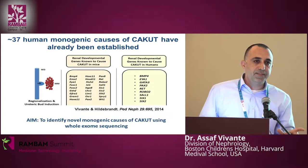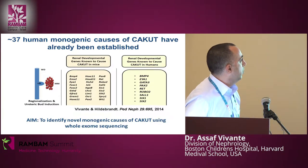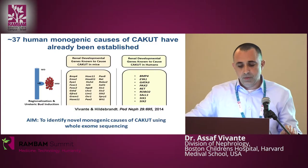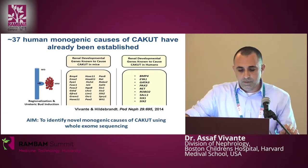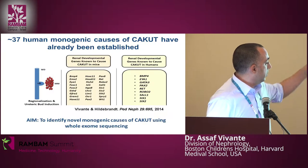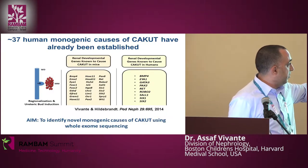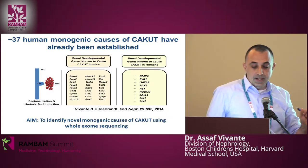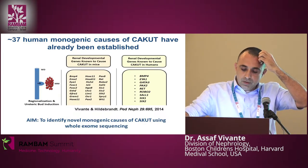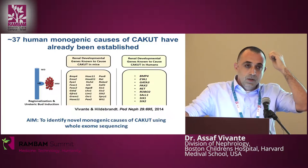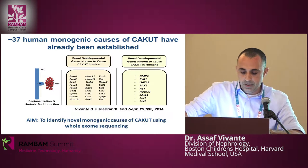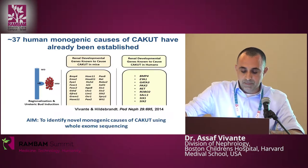So far, around 37 monogenic forms of CAKUT have been established. Most CAKUT genes are highly expressed during the first stages of kidney development — during ureteric budding, many CAKUT-causing genes have been described in mice as well as in humans. Our main aim in the lab is to find novel CAKUT-causing genes with the help of whole exome sequencing, homozygosity mapping, and other genotyping methods.